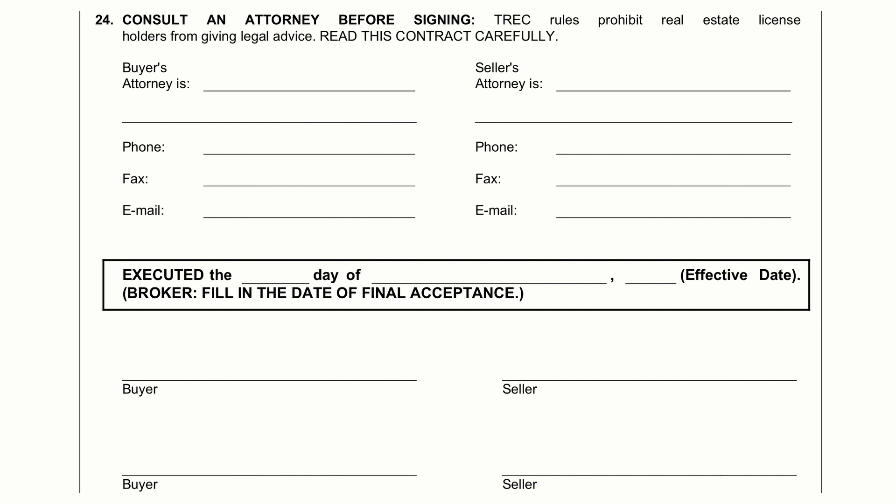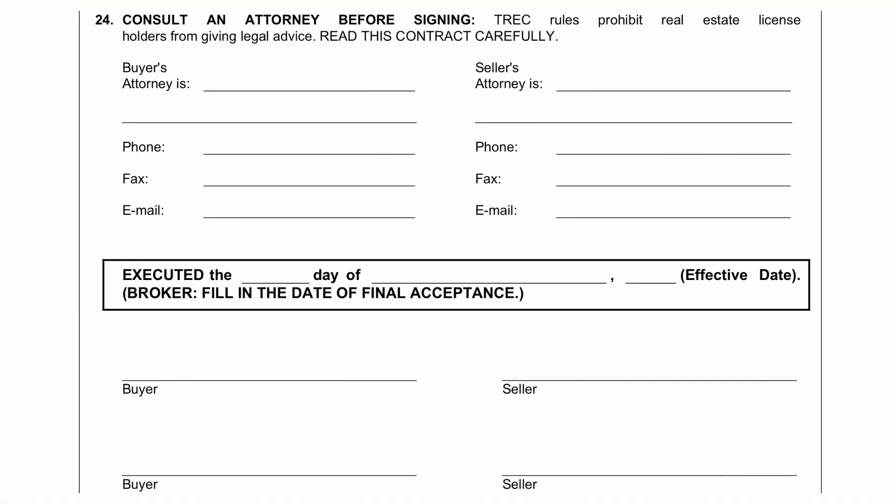Most agents believe that the executed date should be filled in as the date that both the buyers and the sellers have initialed all the appropriate spaces and signed in the space just below the executed date box. In fact, that is only true if the agent of the last party to sign contacts the agent on the other side of the deal and notifies them that all parties have signed and the execution of the contract has taken place — and it's executed today on the 1st.